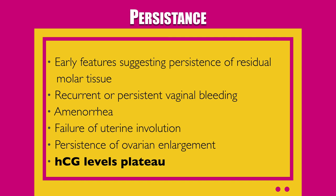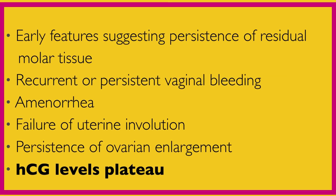Early features suggesting persistence of residual molar tissue are: recurrent or persistent vaginal bleeding, amenorrhea, failure of uterine involution, persistence of ovarian enlargement, and HCG levels that plateau instead of reducing.